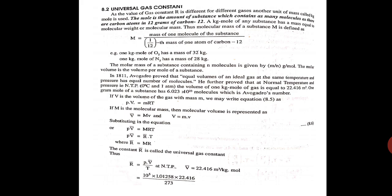Now let us see this universal gas constant. So here to find out this, the term mole comes into picture. As the value of constant R is different for different gases, another unit of mass called mole or kg-mole is used. The mole is the amount of substance which contains as many molecules as there are carbon atoms in 12 grams of carbon-12.